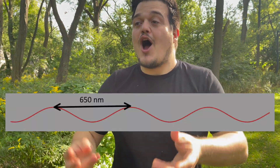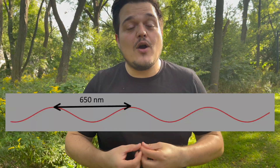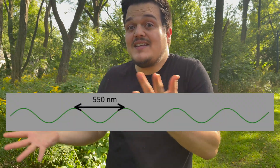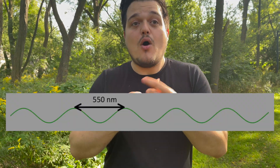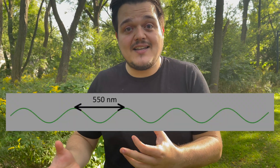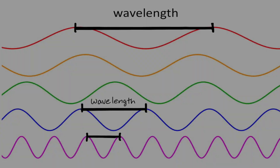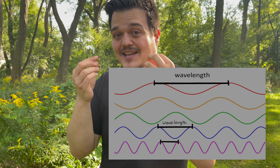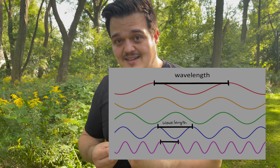When our brains receive 650 nanometer light, our brains interpret that and go, okay, that's red light. Or if we receive a signal of 550 nanometer light, our brains go, okay, that's green light. But light itself doesn't have a color — light just has a wavelength, and the color is how our brains interpret that light.